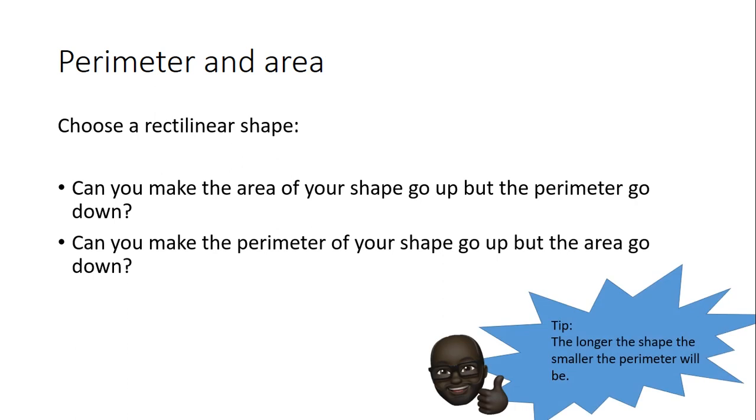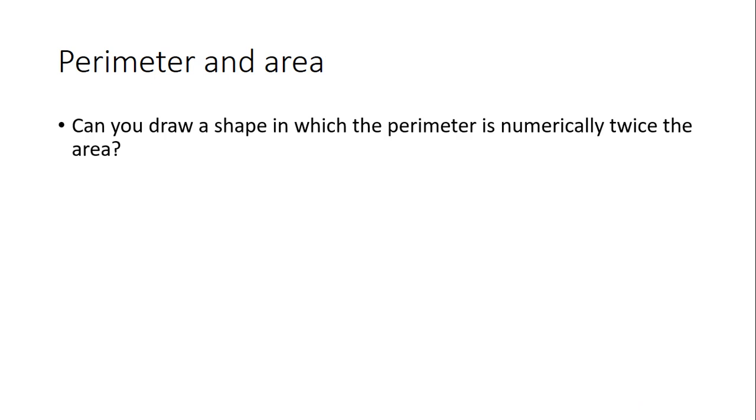If you're going to keep your shape as a rectangle and not have other L shapes or T shapes and things like that, a little tip is that the longer the shape is, if you've got the same area, the longer the shape is, the smaller the perimeter will be.